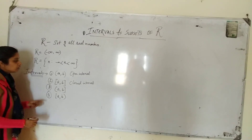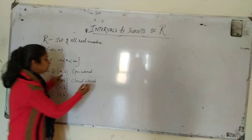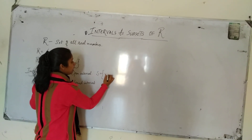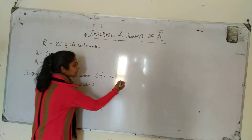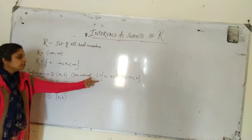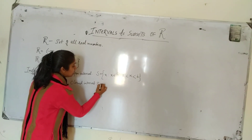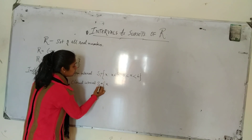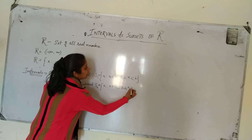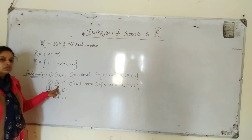If we write the open interval (a, b) in set builder form, we can write it as S equals the set of x such that x belongs to the set of real numbers and x is greater than a and less than b. For the semi-open interval (a, b], x is greater than a and less than or equal to b.